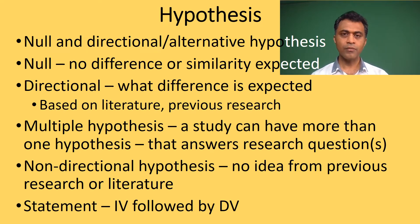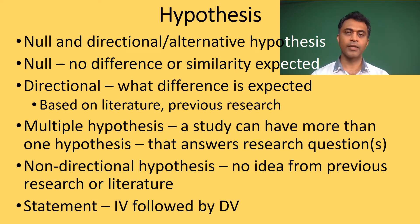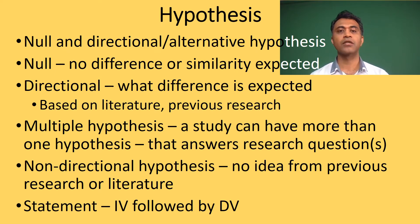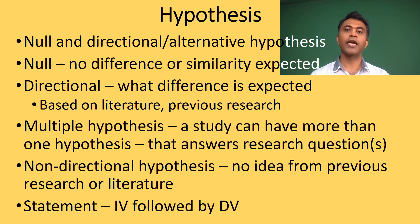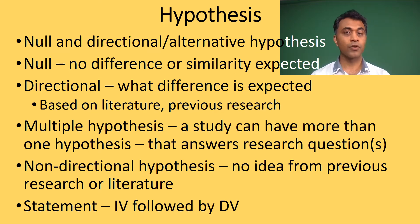Another directional hypothesis example: the prevalence of diabetes in the Indian population is 20 percent, based on previous research in other similar populations. We can then evaluate and test whether this prediction of 20 percent is true or not. If it is true, then this hypothesis is proved.